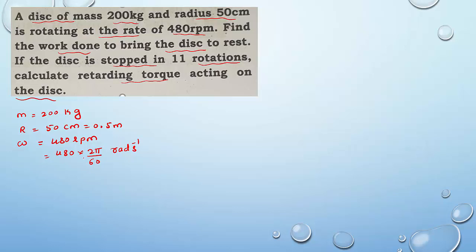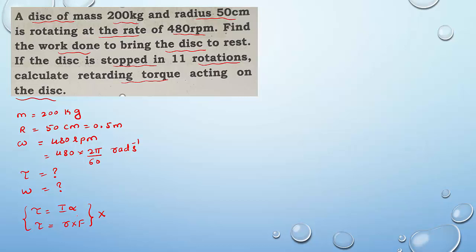The work done in bringing the disk to rest — we have to do certain work to bring the disk to rest. If the disk is stopped in 11 revolutions, calculate the retarding torque acting on the disk. So we have to find torque and work done. The formula for torque is τ = Iα or τ = r × F. But these equations are not suitable because moment of inertia, alpha, and force are not given.